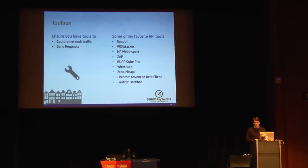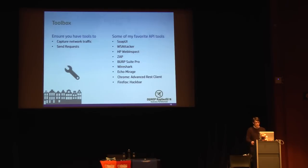A quick toolbox for assessing APIs: two key things you want are first, a way to capture network traffic — whether an HTTP editor and proxy tool for web protocols, or something like Wireshark or another network analyzer for other protocols. Second, a way to send requests — web proxy tools and HTTP editors work well for web protocols, though you may need to write source code for back-ends using Java serialized objects. The two essentials are a way to capture traffic and a way to send traffic.